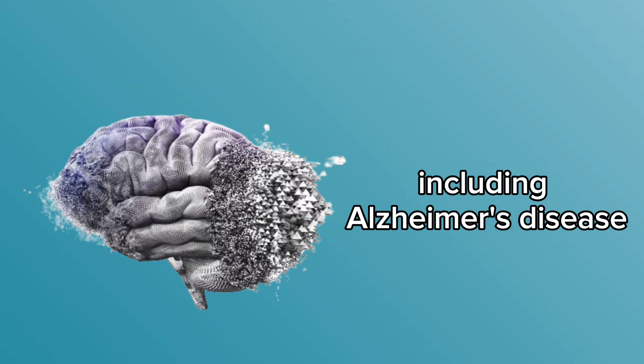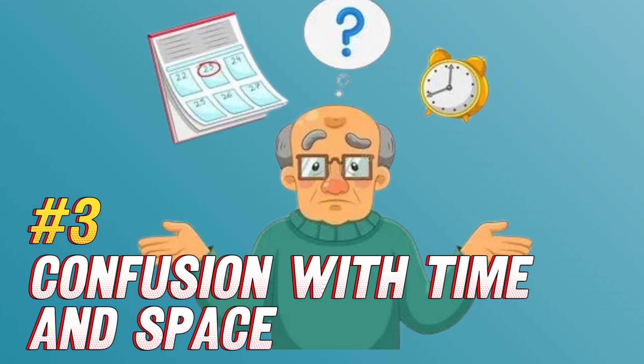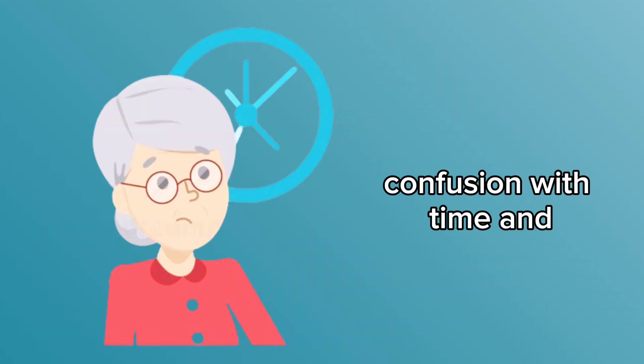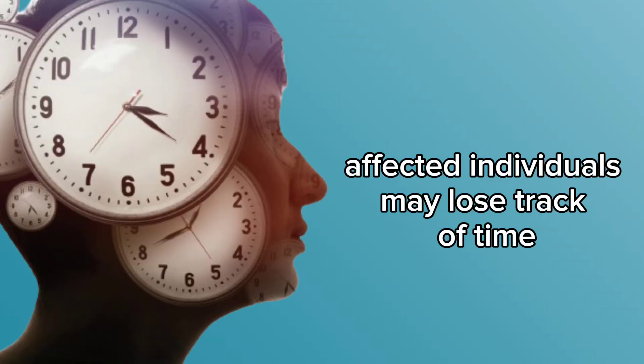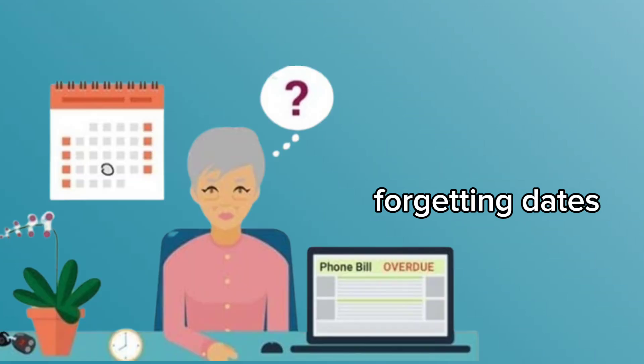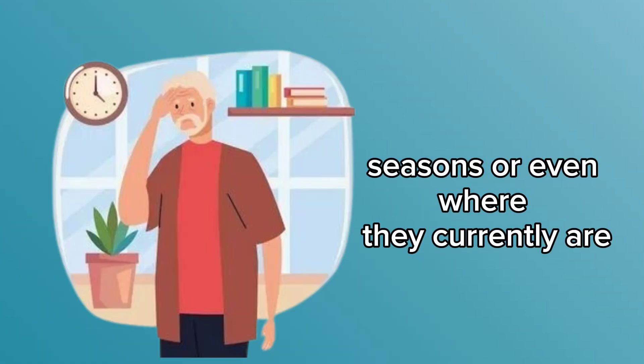Number three: confusion with time and space. Confusion with time and space is a concerning symptom of Alzheimer's disease. Affected individuals may lose track of time, forgetting dates, seasons, or even where they currently are.